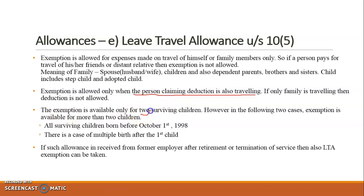The exemption is available only for two surviving children. The airfare, rail fare, or bus fare will be applicable only for two surviving children, but there are exceptions. First, all surviving children born before 1st October 1998 are all allowed — so if the employee had three children before 1st October 1998, all three are allowed. The restriction of only two children applies only after 1st October 1998. Similarly, in case of multiple births after the first child — such as twins or triplets in one birth after the first child — those will all be counted and added up.